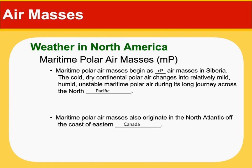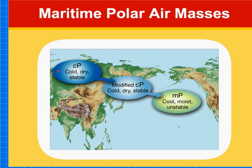Continuing with maritime polar — maritime tells us it's humid, and the P tells us it's cold air. This is the air mass responsible for areas like the northwest: Seattle, Portland — they're always getting hit with maritime polar. As mentioned, air masses change over time. This air comes from Siberia, traveling almost east-southeast, and starts out cold and dry. But as it moves over the northern Pacific, it picks up moisture, resulting in precipitation falling on the northwest United States.